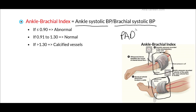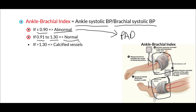If the patient's ABI is less than or equal to 0.9, then that patient is said to have an abnormal ABI consistent with PAD, or peripheral arterial disease. If the ABI ranges from 0.91 to 1.3, that is considered normal. If the ABI is greater than 1.3, this is consistent with calcification of the vessels and does not necessarily represent PAD. Please become familiar with the ankle brachial index, as this will be utilized frequently in evaluating patients with suspected peripheral arterial disease.